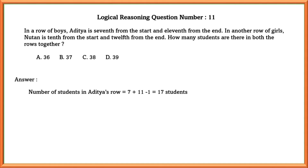To find this, we add Aditya's positions: 7 plus 11 equals 18. Since Aditya is the 7th, there are 6 people in front of him, and from the end he is 11th, so 10 people behind. But Aditya is counted twice, so we subtract 1, giving 17 students in Aditya's row.